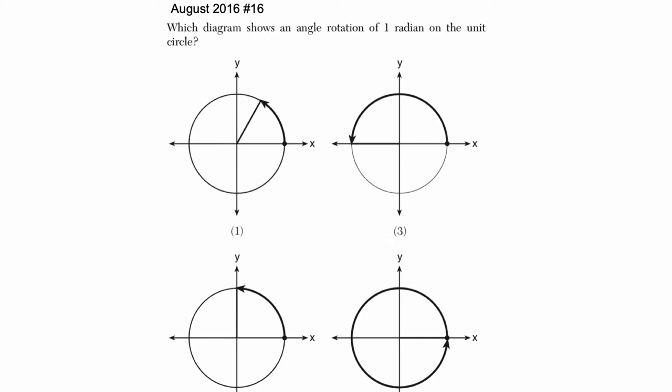So they ask us here to identify which diagram, which of our four graphs, shows an angle rotation of one radian on the unit circle.